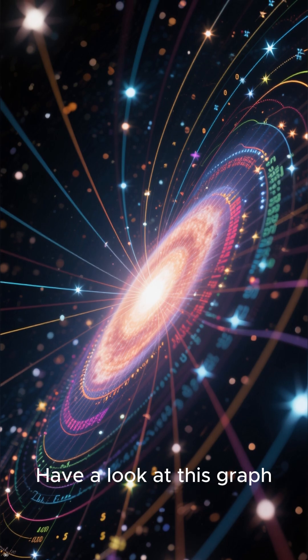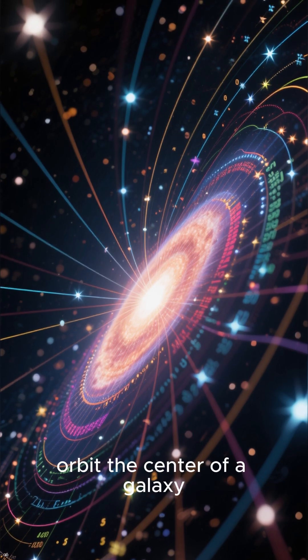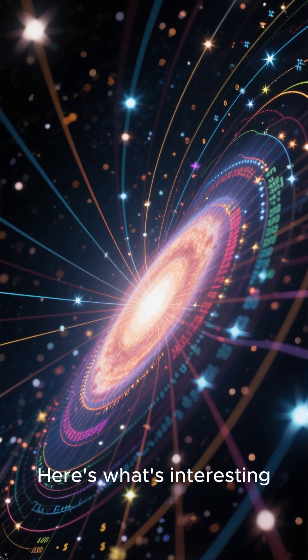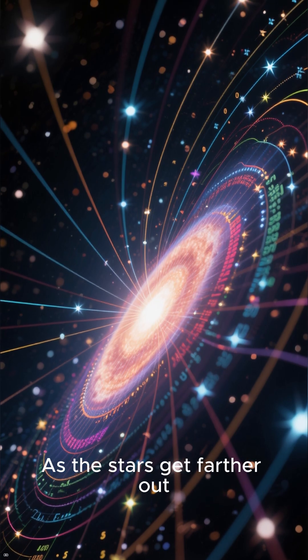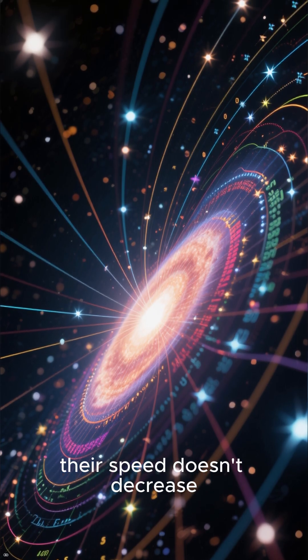Have a look at this graph. It shows how fast stars orbit the center of a galaxy. Here's what's interesting. As the stars get farther out, their speed doesn't decrease.